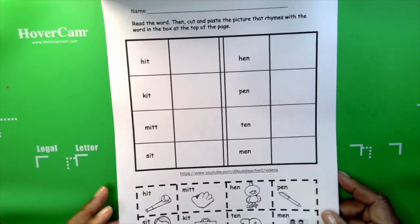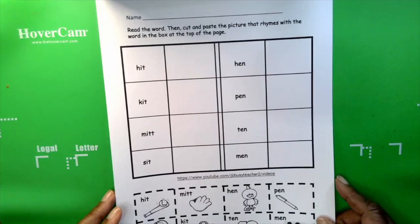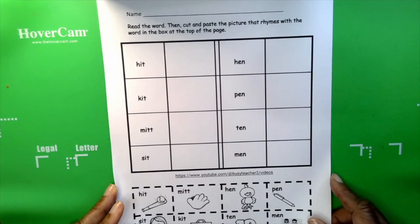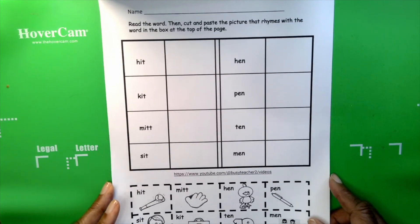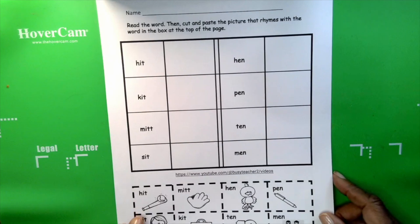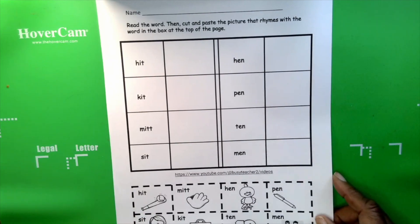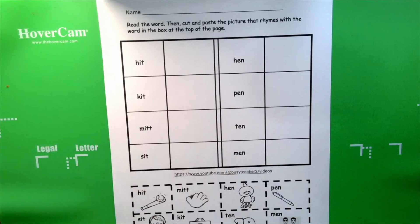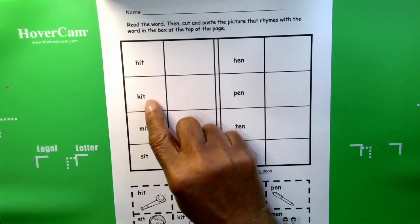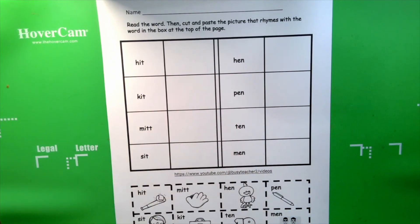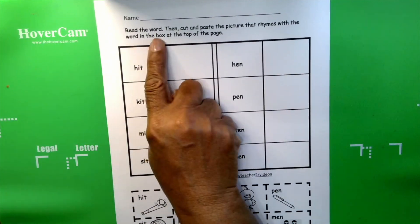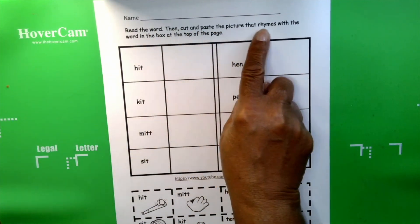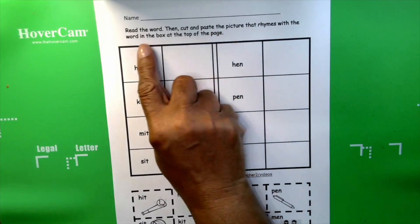Okay boys and girls, hello. You ready to get started? We're working with rhyming words today. Do you know why words rhyme? Think about it. Why does hit and kit rhyme? If you said because they have the same ending sound, you're absolutely right. Let's read the directions before we get started. It says read the word, then cut and paste the word that rhymes with the word in the box at the top of the page.